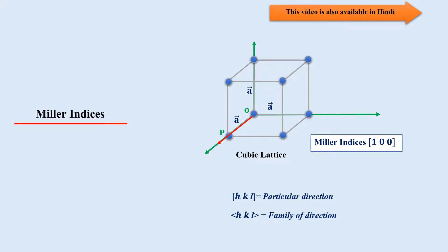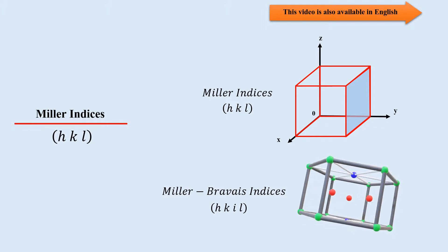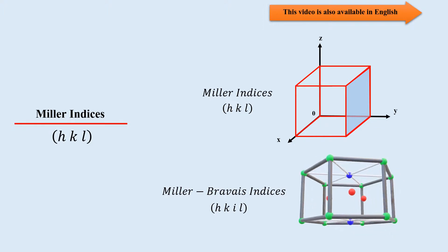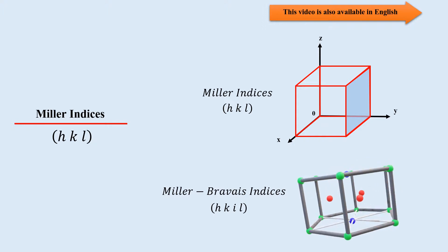In the Part 1 video of Miller indices, we learned that Miller indices are used to specify the direction of a lattice point. The square bracket denotes Miller indices of a particular direction, and the angle bracket denotes the family of directions. We also learned that the number of indices depends on the dimension of the lattice. In this video, we will learn that Miller indices are used to specify the plane of a lattice, and for the hexagonal lattice, we will also define the Miller-Bravais indices.